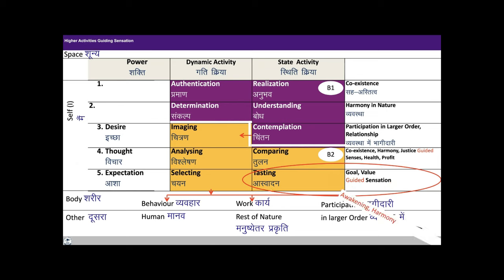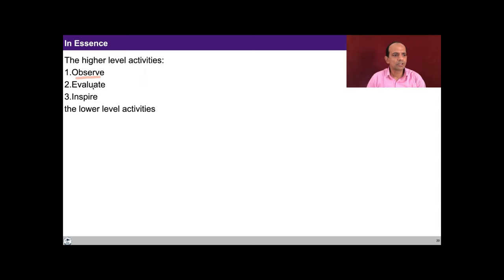This kind of transformation is visible in the self at the level of expectation with right understanding ensured. The sensation, which was unguided earlier, is now guided by goal and value — there is awakening of harmony in the self and contemplation of value. With this the sensation from sound, touch, sight, taste, and smell gets rightly utilized. The upper block is guiding the lower block activities, and this is the desirable transformation. We are already active in block B2, but once block B1 gets activated, the lower activities get self-organized, get in order, get in harmony, and get properly guided.